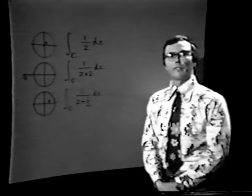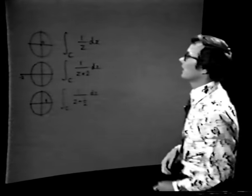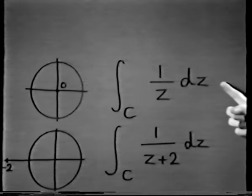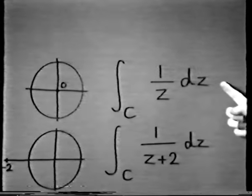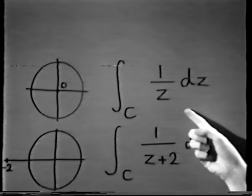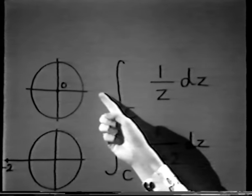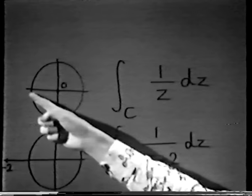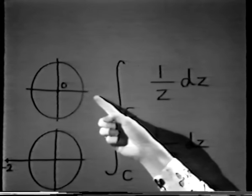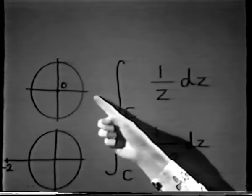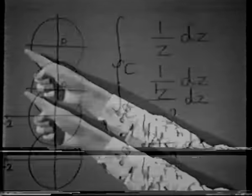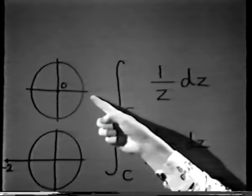Let's stop philosophizing and look at the first one. The first integral is ∫(1/z)dz taken around the unit circle — one you've seen before. The way we do it is to parametrize the unit circle. Taking the familiar parametrization z = e^(it), as t goes from 0 to 2π we go around the unit circle.